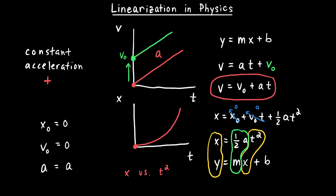The y-intercept of this graph would be zero because the object started with an initial position of zero. This is the process of taking a nonlinear graph and making it linear by matching it to the equation of a line. It's easier to analyze a graph with a constant slope, and finding acceleration is much easier from a graph of x versus t squared than from x versus t.